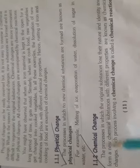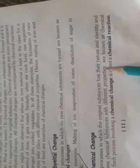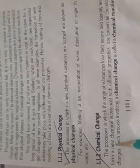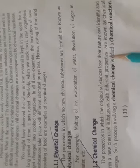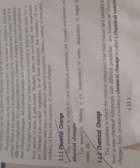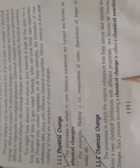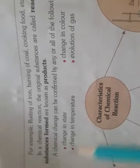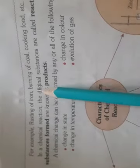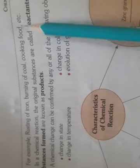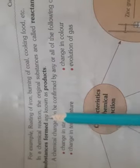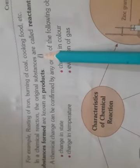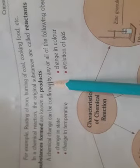Now, chemical change. The processes in which the original substances lose their nature and identity and form a new chemical substance with different properties are known as chemical change. Such processes involving a chemical change are called chemical reactions. Examples are rusting of iron, burning of coal, cooking food, etc. The original substances used in chemical reactions we call reactants, and the new substance formed we call product.